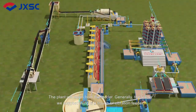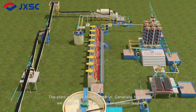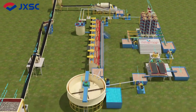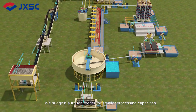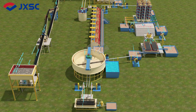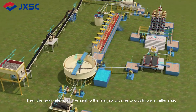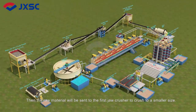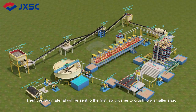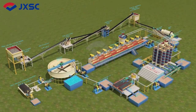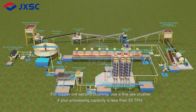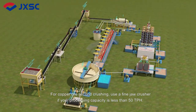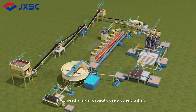Generally, the feeder we suggest is a trough or vibration feeder — a trough feeder for smaller processing capacities. The raw material will then be sent to the first jaw crusher to crush it to a smaller size. For secondary crushing of copper, use a fine jaw crusher if your processing capacity is less than 50 TPH.